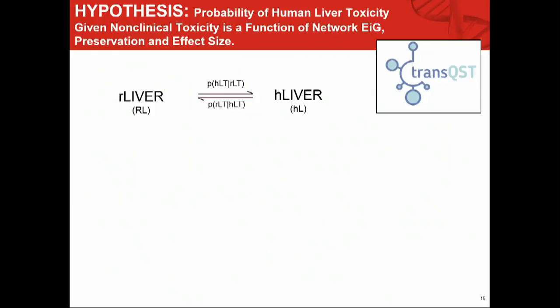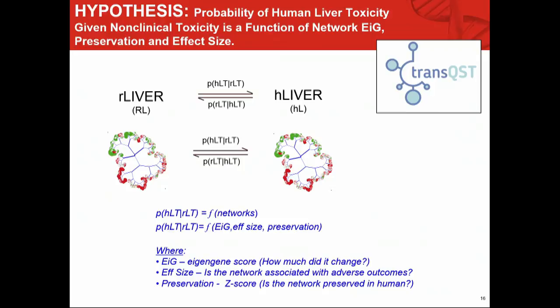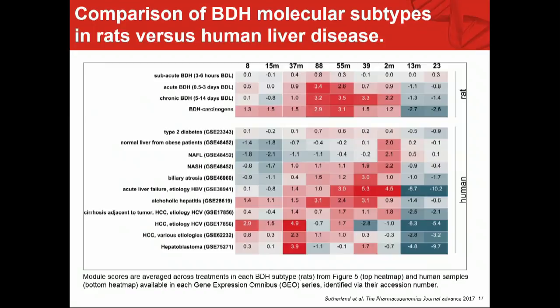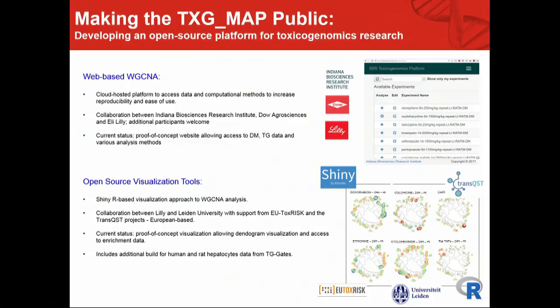The key point: if we ask what's the probability of getting human liver toxicity if we understand rat liver toxicity, it's a function of the network perturbations. We want to know how much it changed, what its association with pathology is, and whether it's preserved in the next system of interest. This doesn't give you a precise understanding of an outcome, but since this is a precision medicine conference, I can precisely tell you what I think the probability is that it will translate across species in a quantitative way. We're trying to put all of these technologies in the public domain so anyone can use them. Thank you very much.